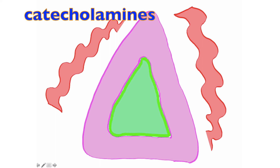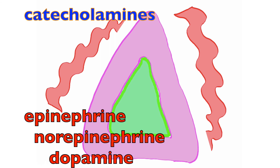In green here, we see the adrenal medulla, which is composed of nervous tissue, just like the posterior pituitary gland. The adrenal medulla releases the catecholamines, which include epinephrine, norepinephrine, and dopamine. These are neural hormones because they are released from nervous tissue directly into the bloodstream.